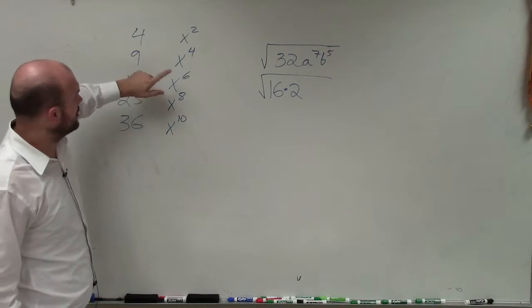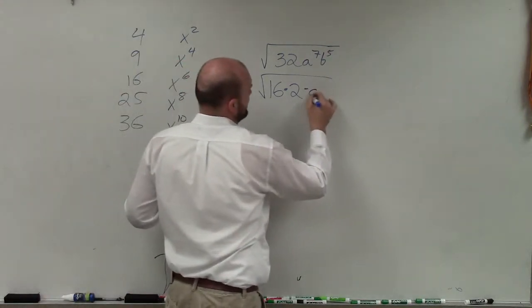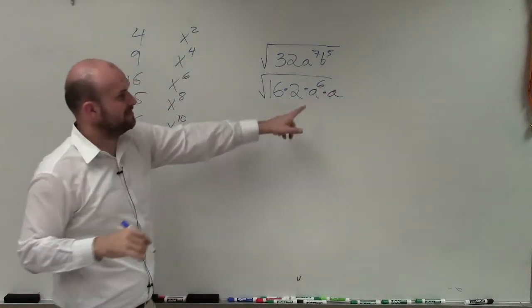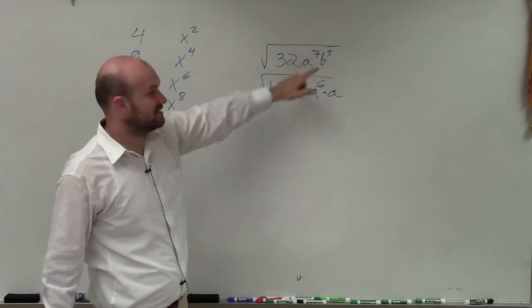For a to the seventh, it is divisible by a to the sixth. So if I multiply by a to the sixth, then I need to multiply that by a to give me a to the seventh, because a to the sixth times a to the first would be a to the seventh.